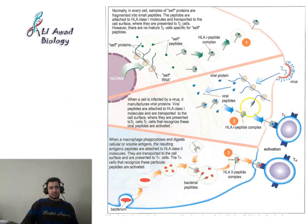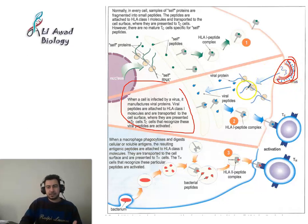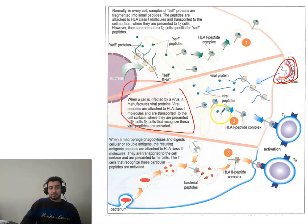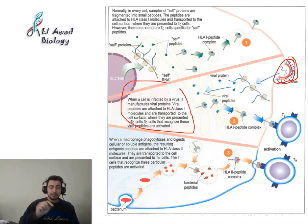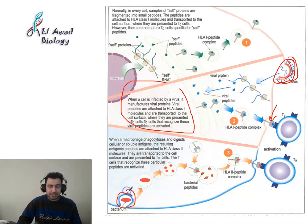Looking at this figure, this is a cell infected by a virus. These are the antigens of the virus. When the virus infects the cell, the cell puts the viral peptide in the context of HLA class one and presents it on the surface of the cell. Here we have HLA class one and the non-self peptide in its context.